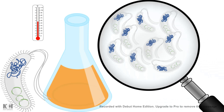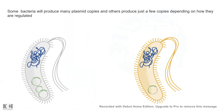Some bacteria inherently maintain a low number of copies of a plasmid, while others maintain a high number. This copy number is a regulated process. If you want to know more, there's another video about plasmid copy number regulation in the same playlist.